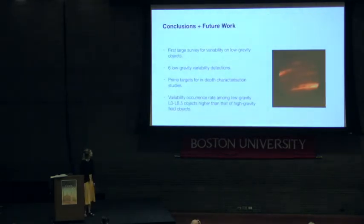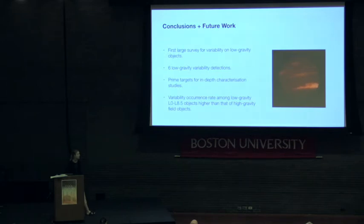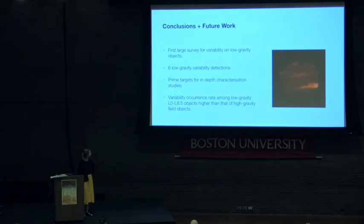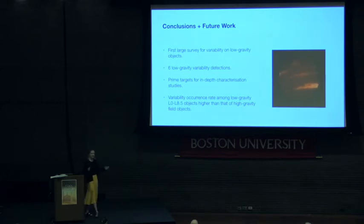In my conclusions: we've conducted the first large survey for photometric variability on low-gravity objects, and detected variability in six low-gravity objects and one possibly low-gravity object. These are prime targets for follow-up studies, and I will be obtaining Spitzer time series monitoring of the detections in this survey. The survey results show that the variability occurrence rate among the low-gravity objects is higher than that of the field brown dwarf population.